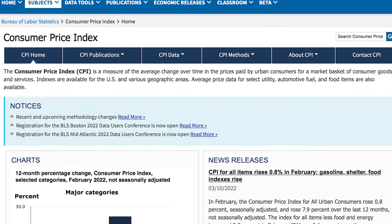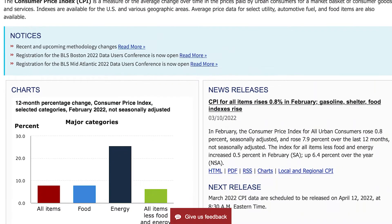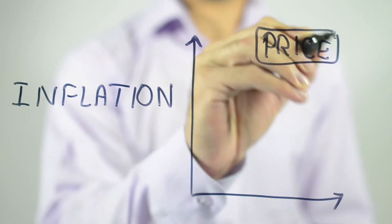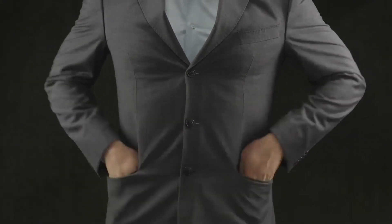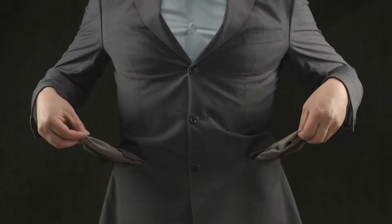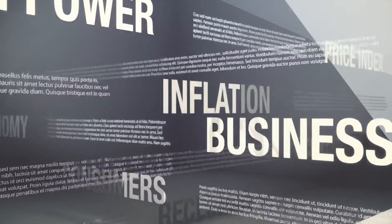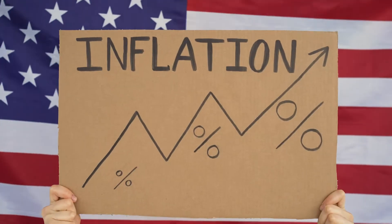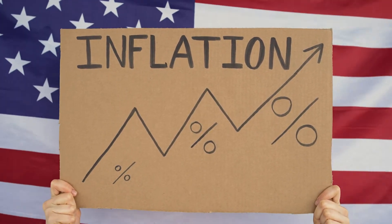One measure of inflation is the Consumer Price Index, known as the CPI, and this is the index generally accepted to be the measure of inflation in the economy. But many economists think this measure tends to overstate inflation. And if that's the case, could all these doomsday articles about the inflation crisis be overdone? In this video, I'm going to share three problems with the CPI as a measure of inflation and what it means for the wider economy.